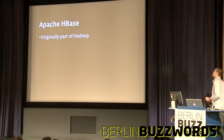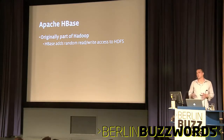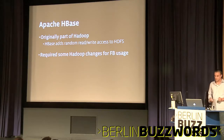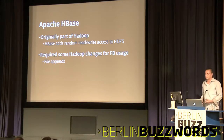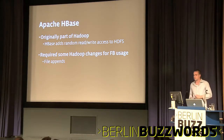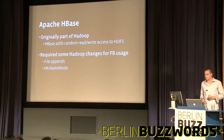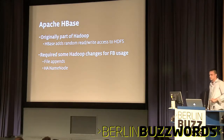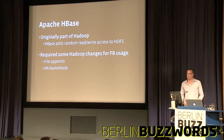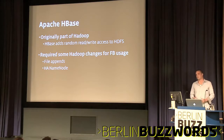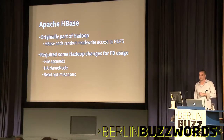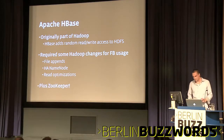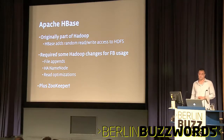So, what is Apache HBase? Originally it was part of the Hadoop project with the aim of adding random read and write access on top of HDFS. At Facebook it did require some changes — some built at Facebook, some outside, some not yet in an Apache branch. File appends, which are in Apache, give you data durability. Also the HA NameNode — Facebook has something called Avatar Node, which is basically an HA NameNode. We've done a lot of read optimizations in HDFS, including a local shortcut reader. And HBase also uses Zookeeper, which is a system we're using more and more at Facebook.